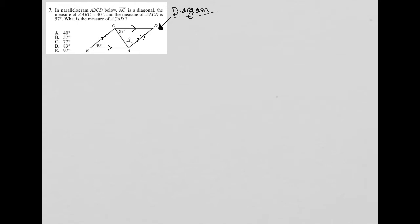The measure of angle ABC is 40. So we see that here. We see the 40 there. And the measure of angle ACD is 57. So we also see that measured there. What is the measure of angle CAD? So we also see that with the question mark here. So the only bit of information that's been provided here that we haven't really been able to extract more information from as of yet is the fact that this is a parallelogram and this diagonal.